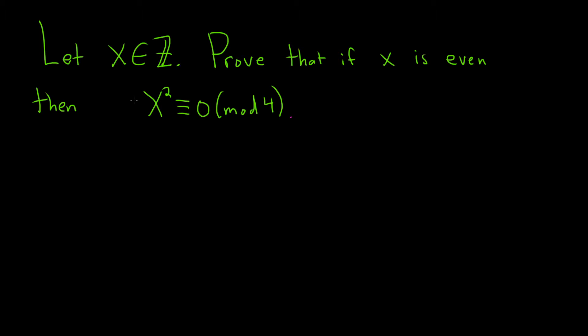Let me refresh your memory on exactly what everything means here. Z here is the set of integers. x being an even number means we can write x in the form 2 times n, where n is an integer. That's what it means for an integer to be even.